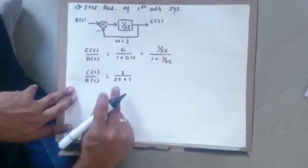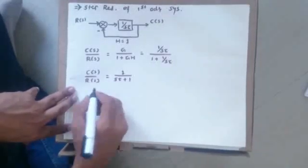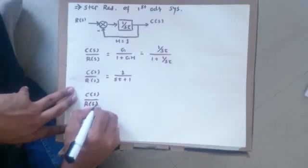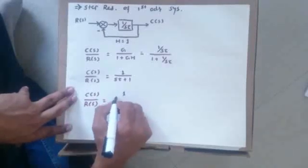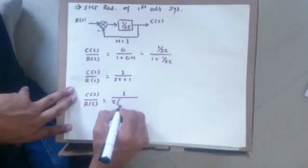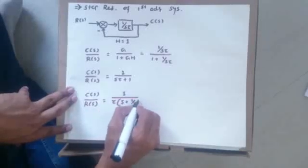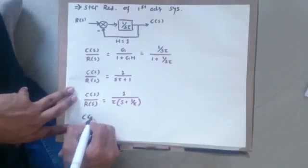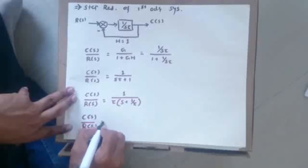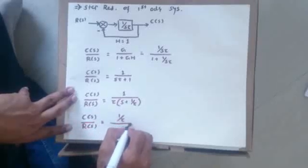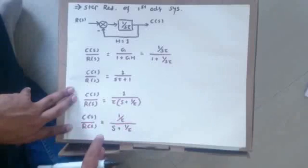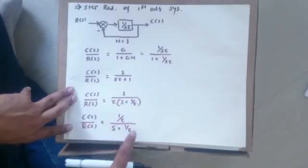Taking tau as common, I will get C upon R equal to 1 divided by tau, into (s plus 1/tau). This can also be written as C upon R equal to (1/tau) divided by (s plus 1/tau). This is my first order system because the denominator equation contains the maximum power of s equal to 1.